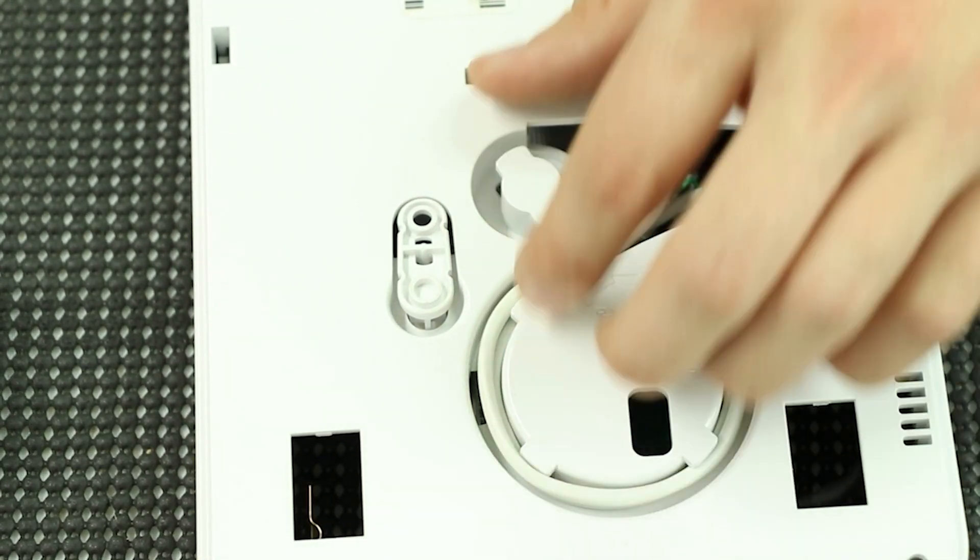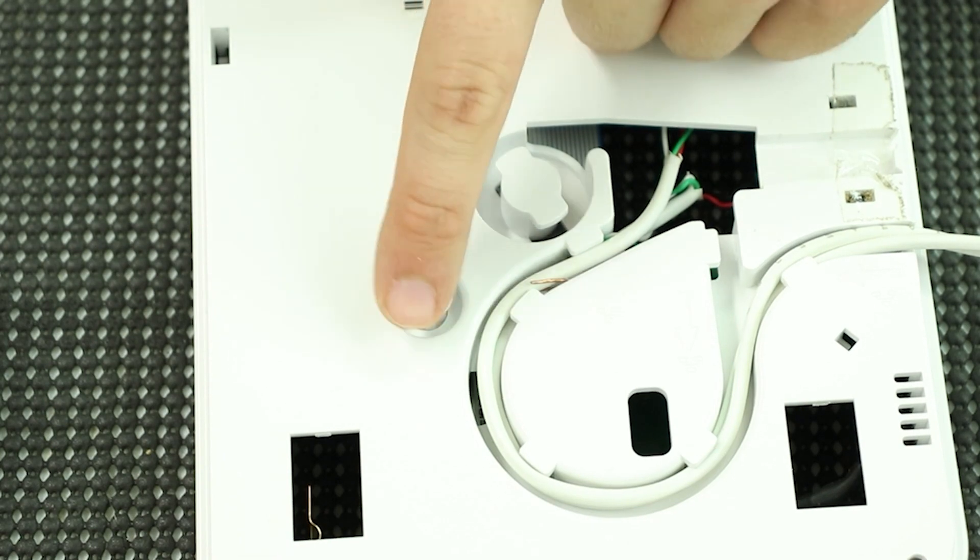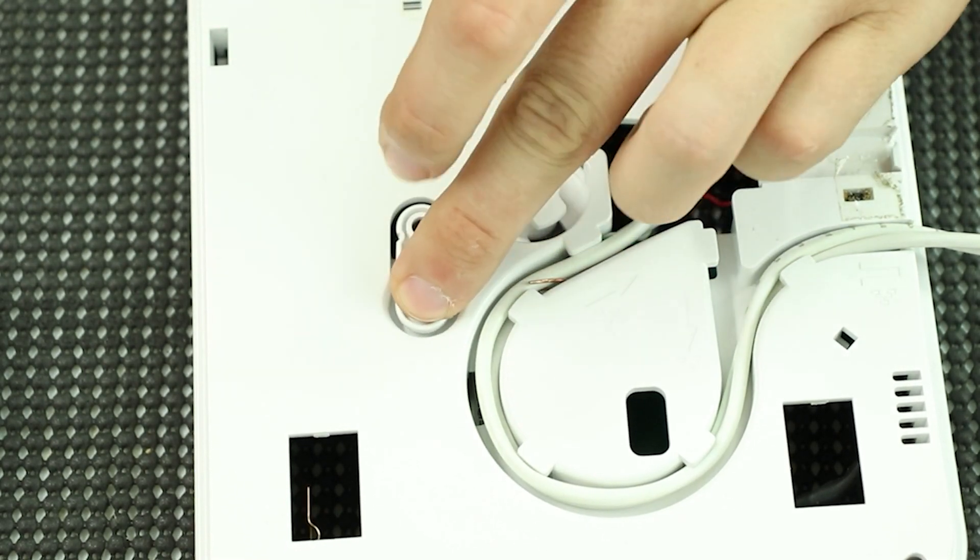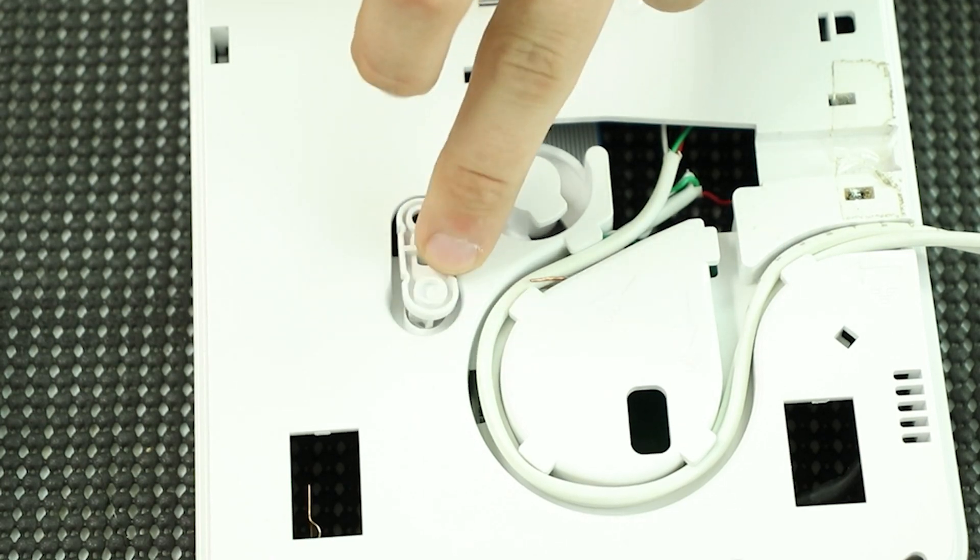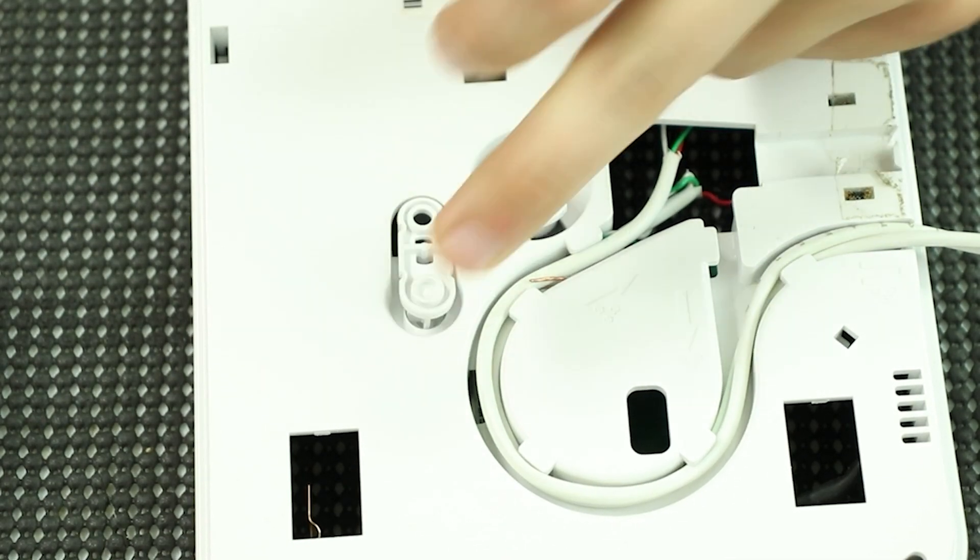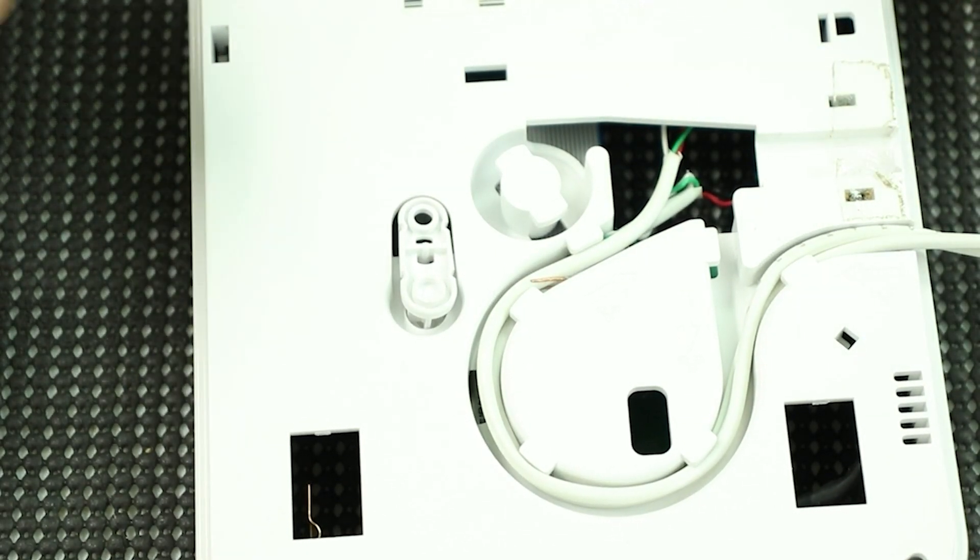I'll make sure they're down in there nice and tight because this tamper switch right here is very sensitive. A lot of times we have to put cardboard behind it just to keep this depressed enough so that the communicator doesn't show a tamper.